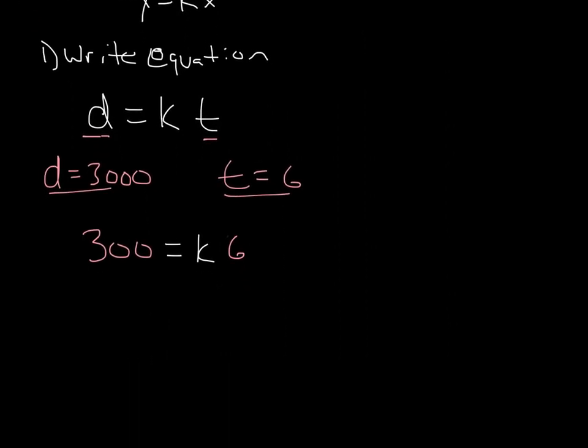Now how do we solve this? To solve for k, we divide both sides by 6. We get k equals 300 divided by 6, which is 50.